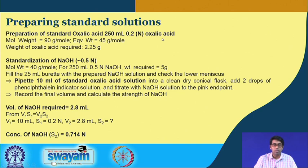This is the calculation that was used when these standard solutions were prepared. 250 ml of 0.2 normal oxalic acid was prepared — the molecular weight is given. Based on the volume needed and the strength desired, we calculated that only 2.25 grams of oxalic acid was required. It was weighed out, dissolved in 250 ml of water to make the standard solution, and then that standard solution was used to standardize sodium hydroxide.